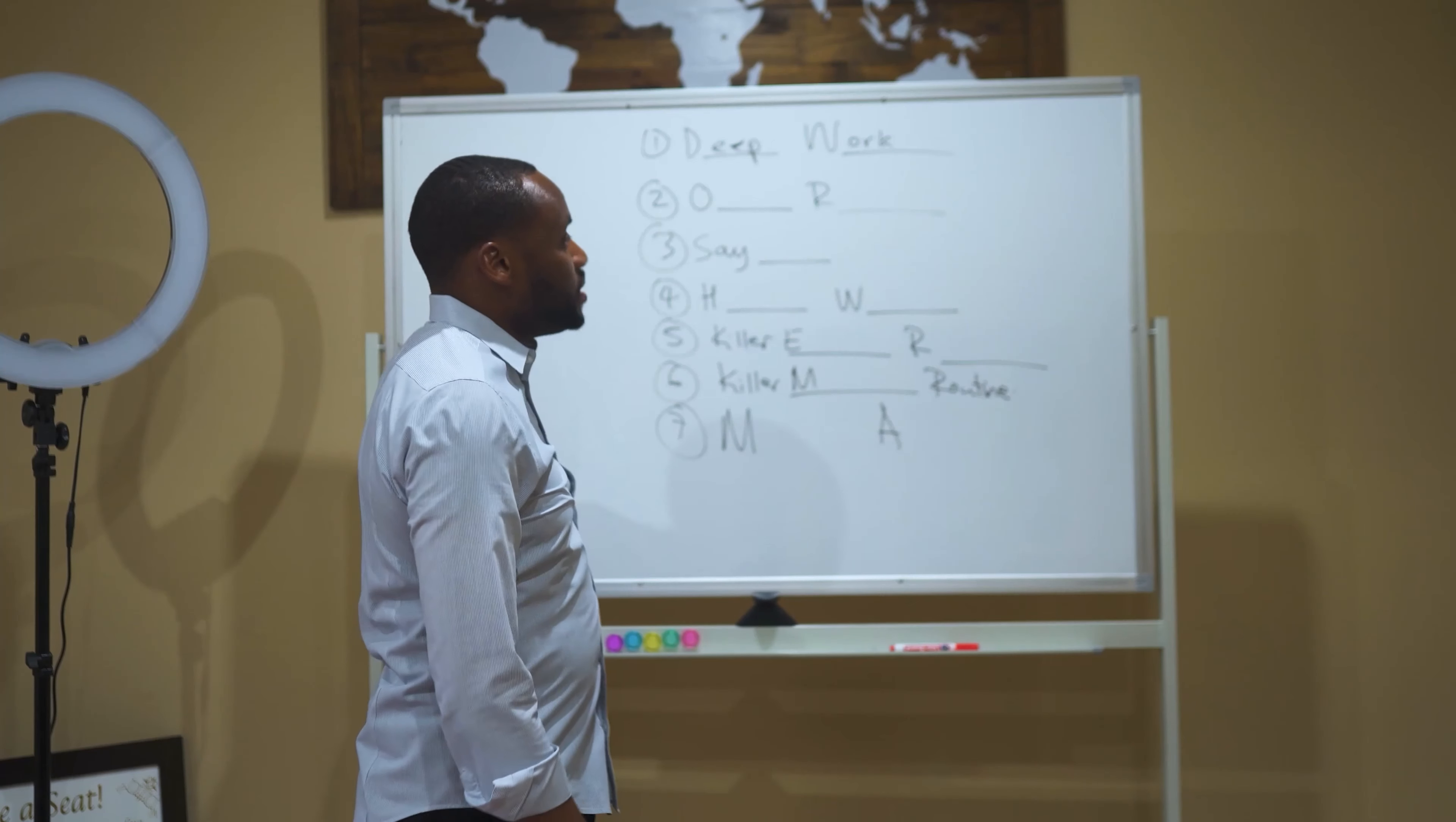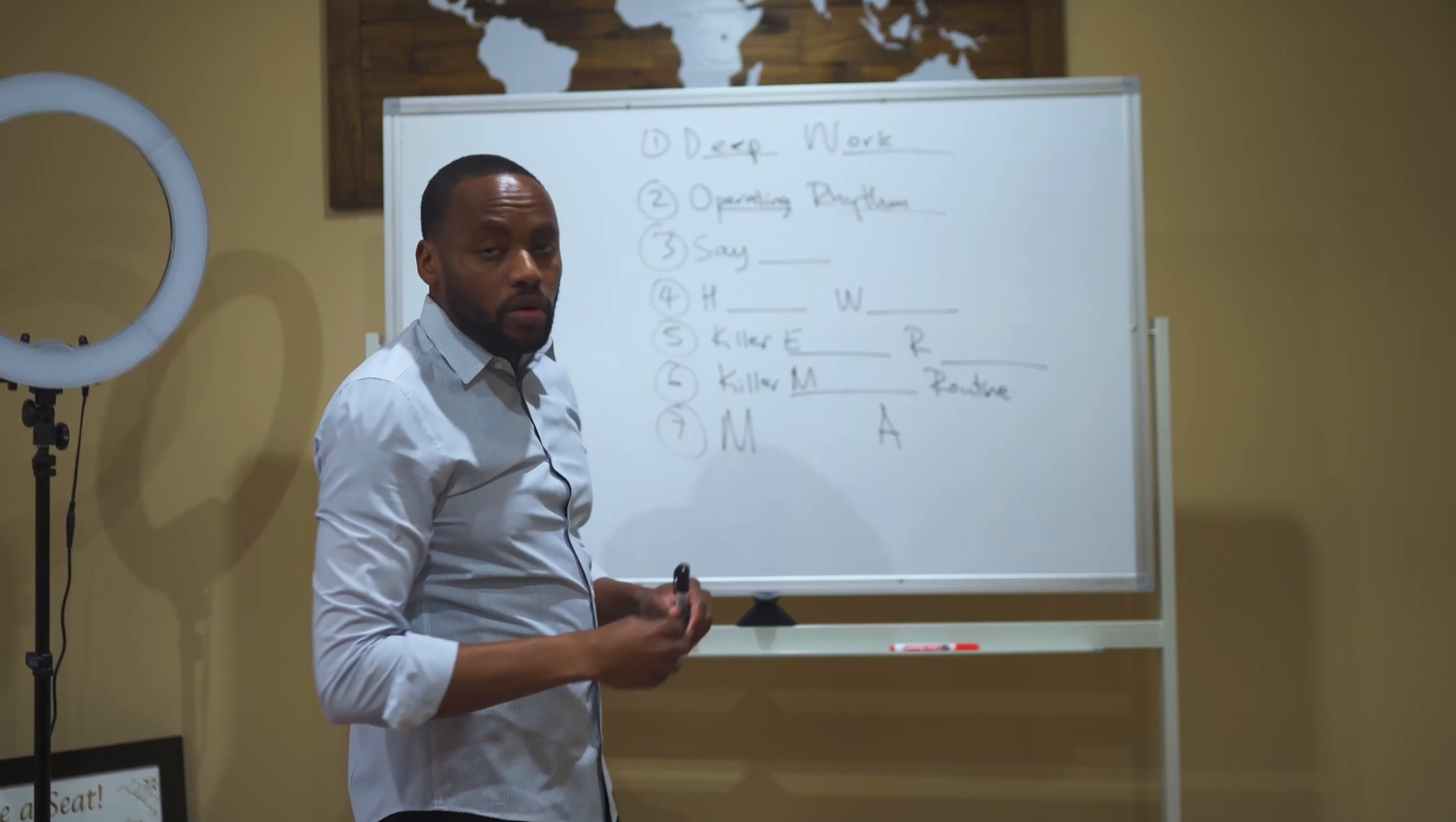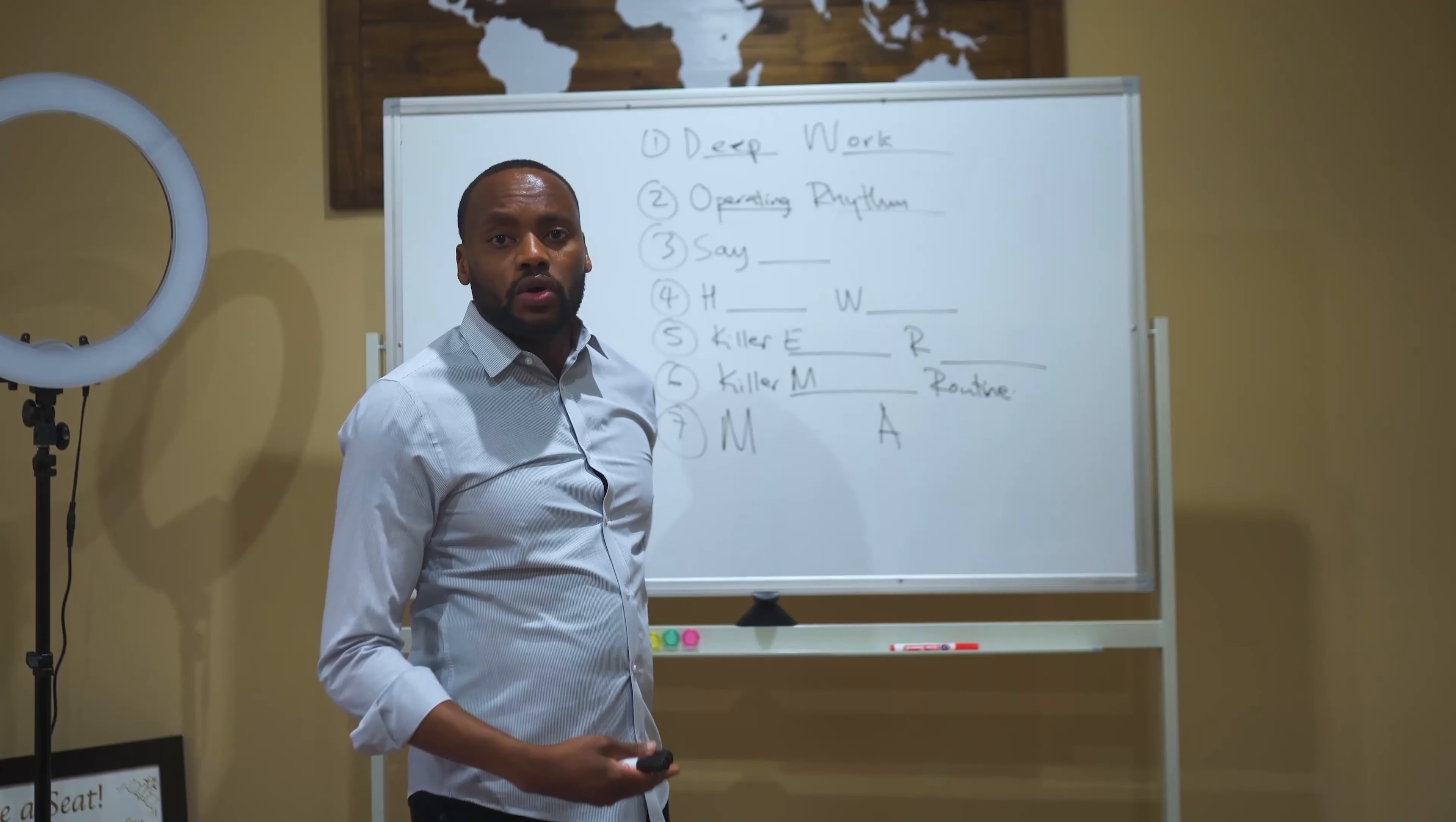The second habit that I really recommend that you do is have what I call establish an operating rhythm. So what do I mean by having an operating rhythm? So any business owner, you need to have things that you do frequently with your team and also for yourself that will enable you to really achieve your goals.